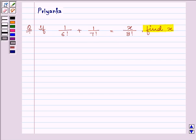Now in this question we need to find x, where 1 divided by 6 factorial plus 1 divided by 7 factorial is equal to x divided by 8 factorial.